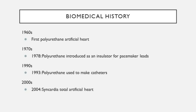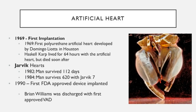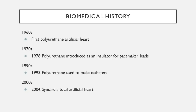In the 1970s, polyurethane was introduced as an insulator for pacemaker leads, which were gaining widespread adoption. In the 1990s, they were used to make catheters — by sheer number, the most widely used biomedical device. In the 2000s, more recent advances like the Cardiowest Total Artificial Heart in 2004 were developed using polyurethanes.